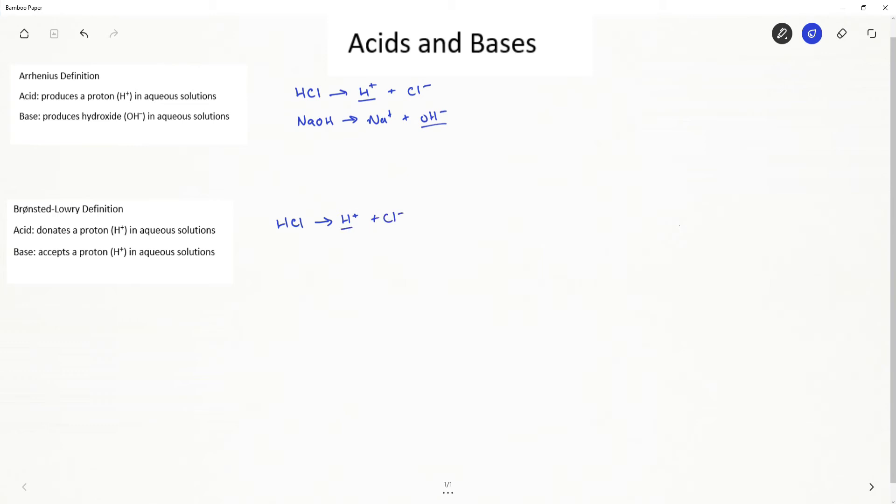For our base, let's take a look at ammonia because it does not fit our Arrhenius definition. However, it will fit our Bronsted-Lowry definition. So for Bronsted-Lowry base, ammonia must accept a proton. And it does this by accepting a proton from water.